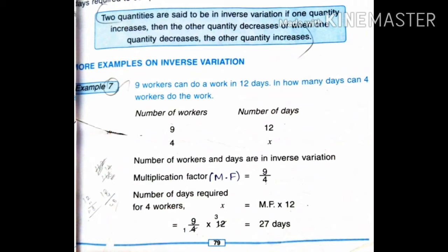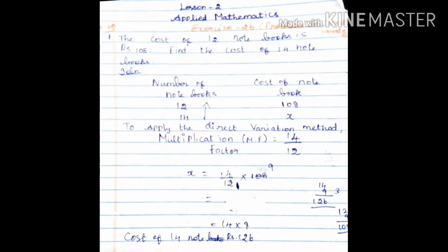Today we will do Exercise 26 sums. Exercise 26, first one: problems on direct variation. The cost of 12 notebooks is Rs. 108. Find the cost of 14 notebooks.